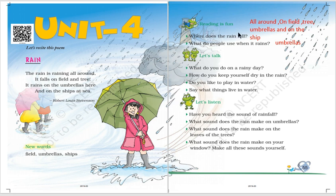Now let's have this part, Reading is Fun. Where does the rain fall? The rain falls all around on field, trees, umbrellas and on the ship. What do people use when it rains? Umbrellas. We generally use umbrellas or rain coats also.